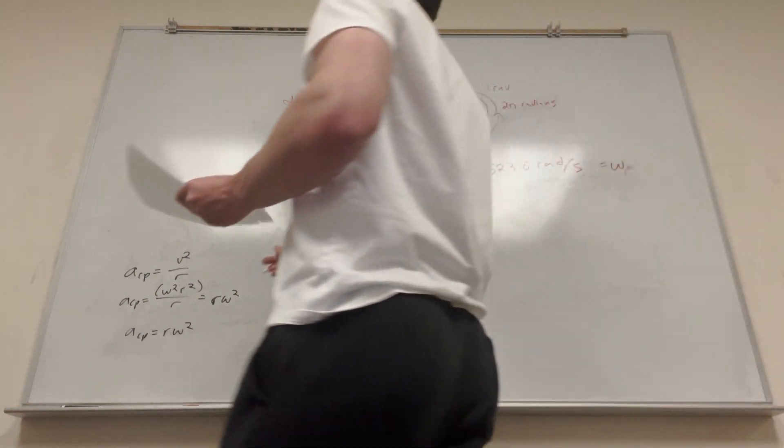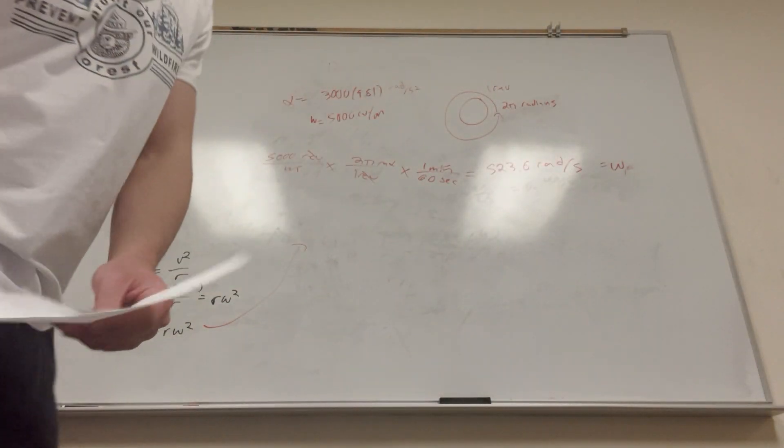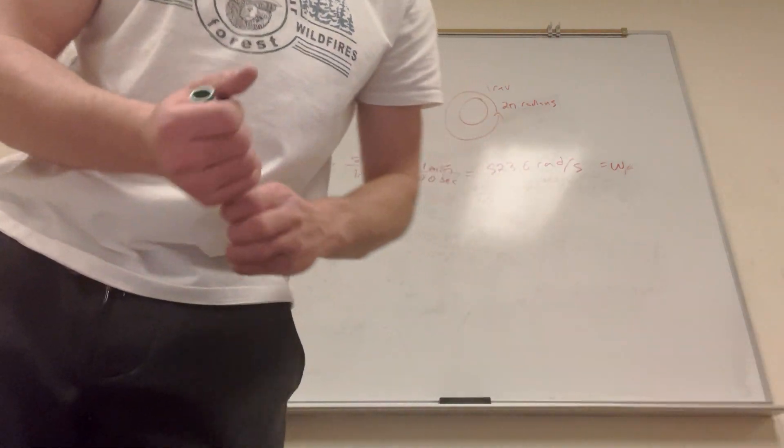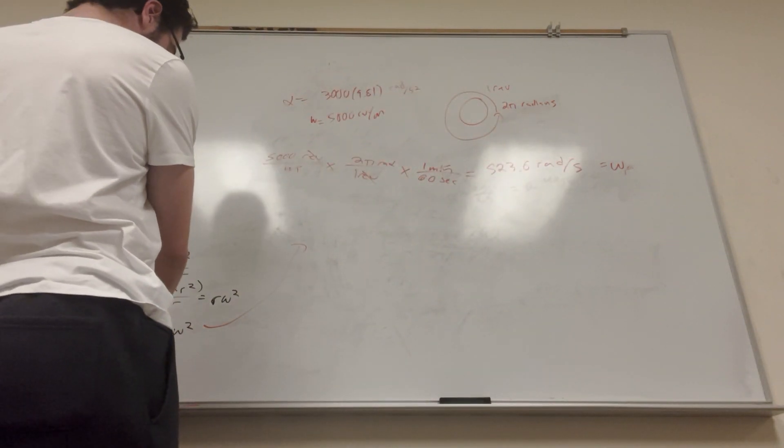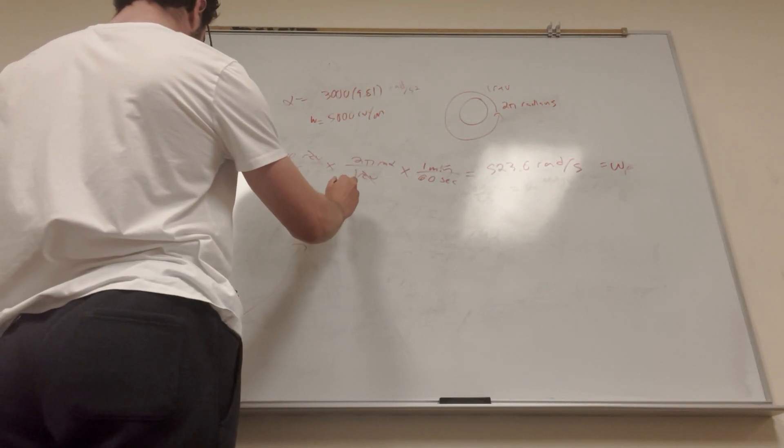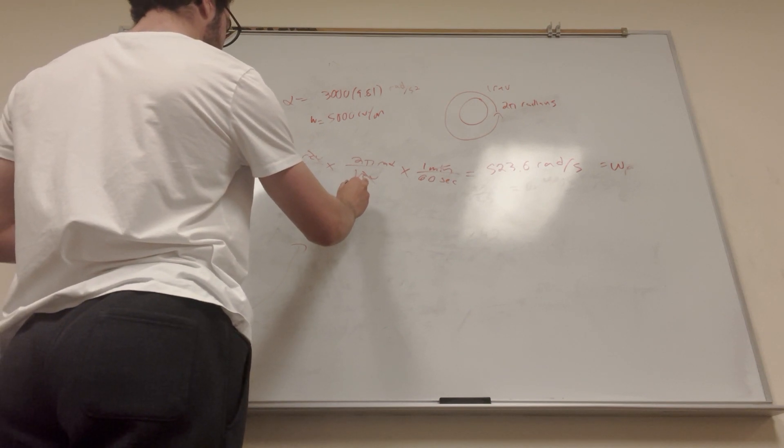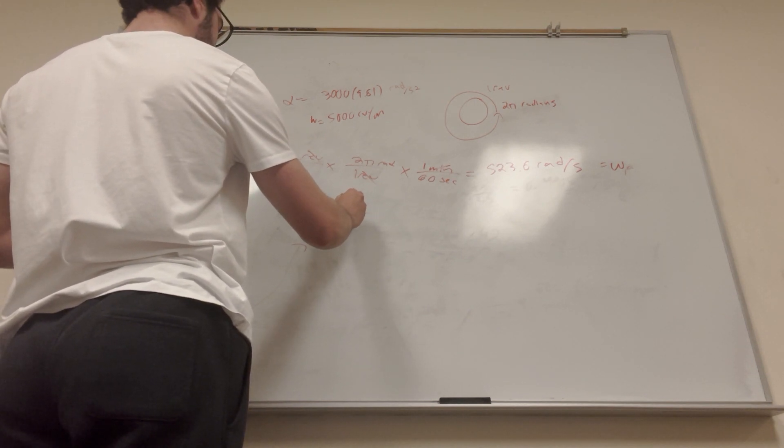So then we can take this formula. I'm going to change our colors because I'm feeling cool today. We can divide by w squared, so it's going to be radius equals angular acceleration divided by w squared.